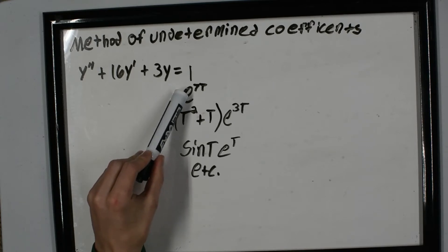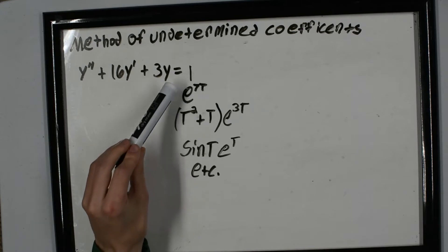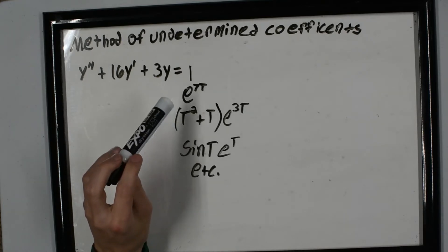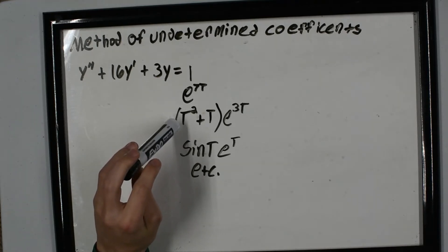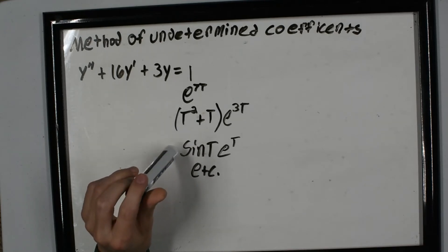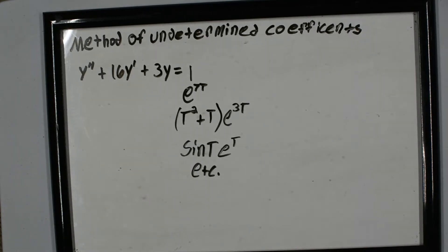When we use the method of undetermined coefficients, we can only use it if we have a constant, an e function, a t function—just a regular variable—sine or cosine, or any combination of those. That's how you know it's going to be method of undetermined coefficients.